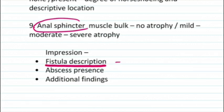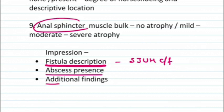In the impression, give the fistula description and classify it according to the St. James University Hospital classification — whether it is Type 1, 2, or 3. Mention the presence or absence of abscess, and any additional findings such as free fluid in the pelvis, pelvic Crohn's disease, hydrocele, or anything similar. Now that everything is clear, it's time to look at two cases.